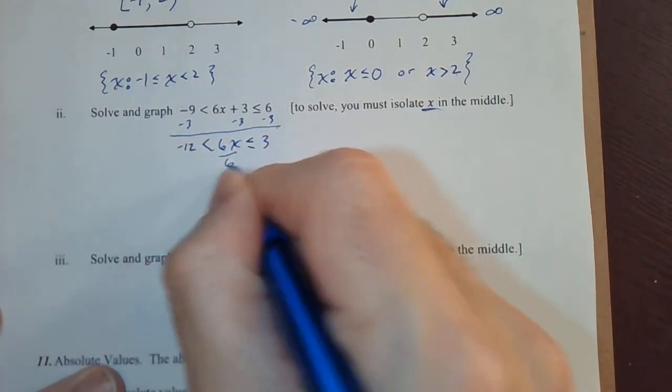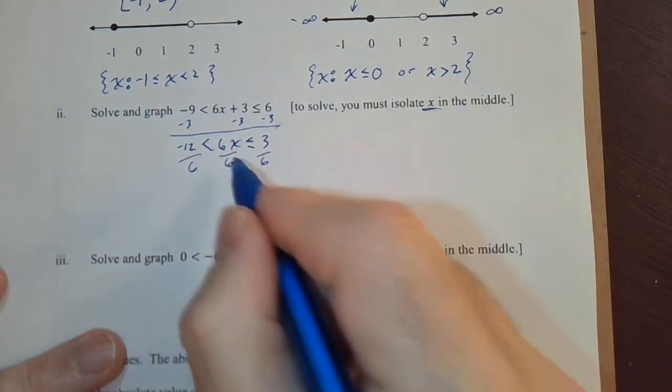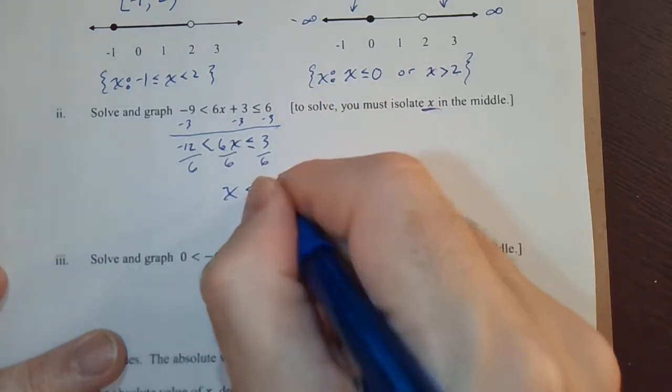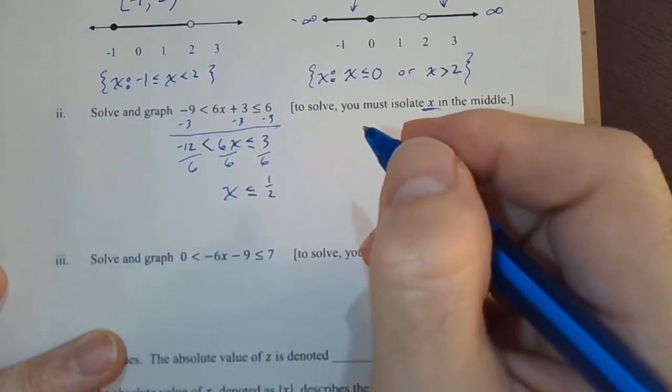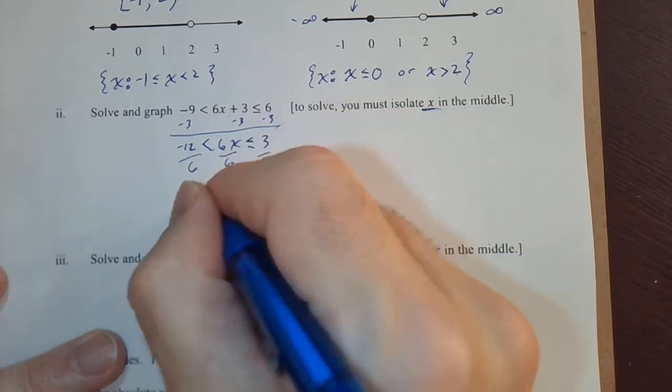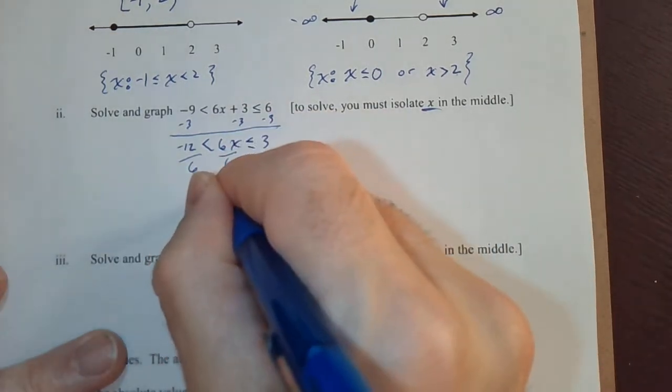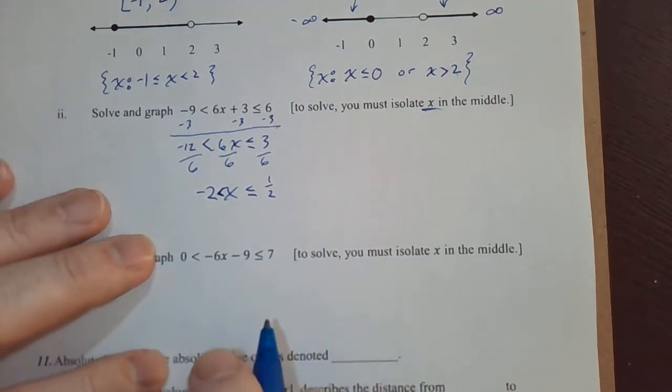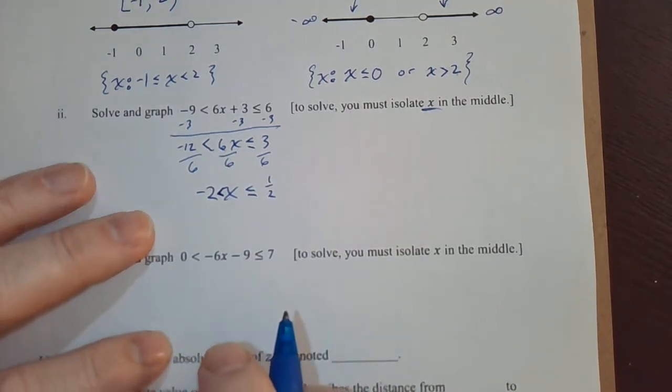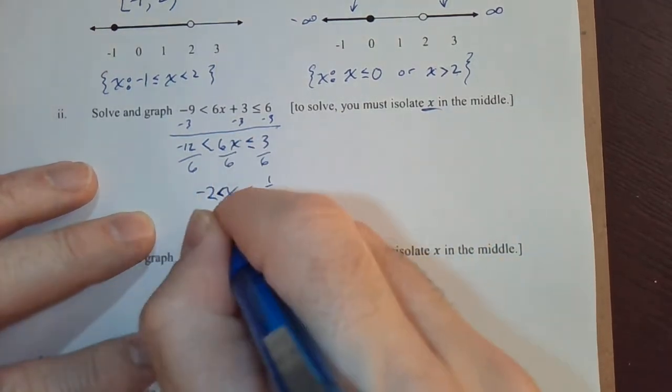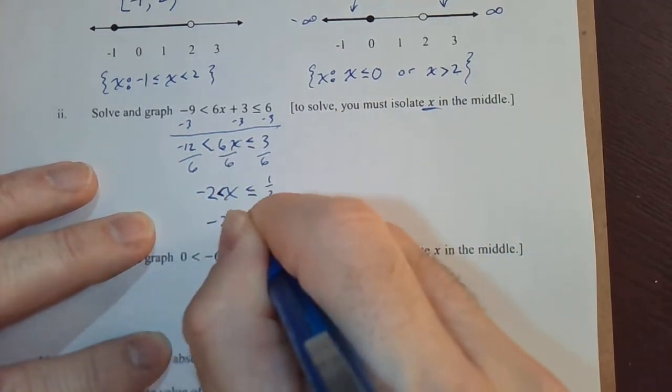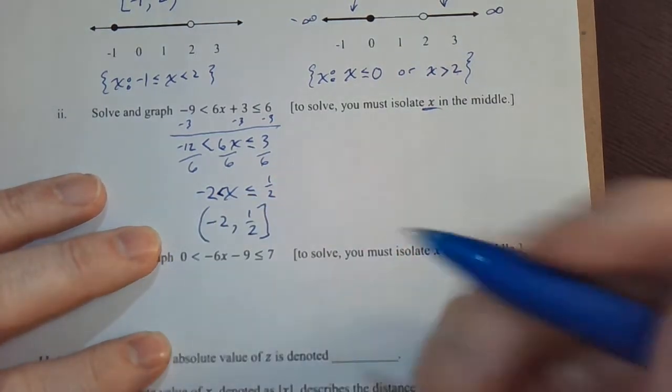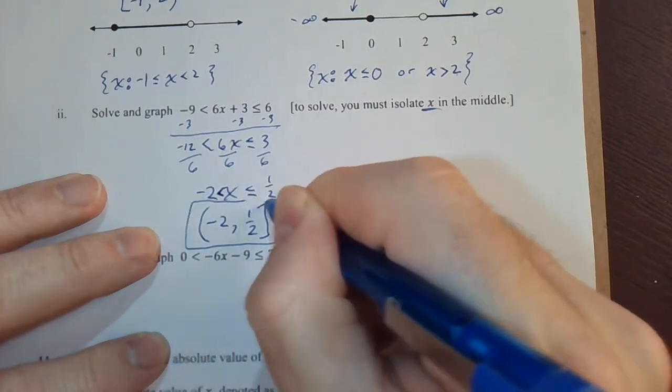Next thing we do is divide everything by 6 to get x by itself in the middle. So x is in the middle, 3 over 6, I'll reduce that to 1 half. Negative 12 over 6, negative 2. Negative 2 less than x less than or equal to 1 over 2. So the solution as an interval is just negative 2, comma 1 half. This one needs a square bracket, that one needs a rounded bracket. That's the solution.